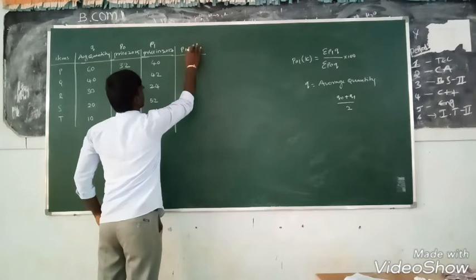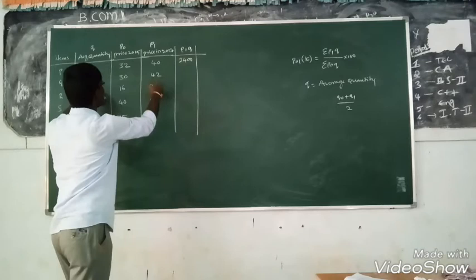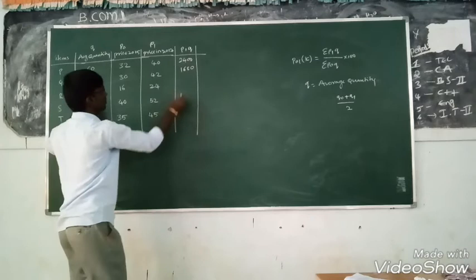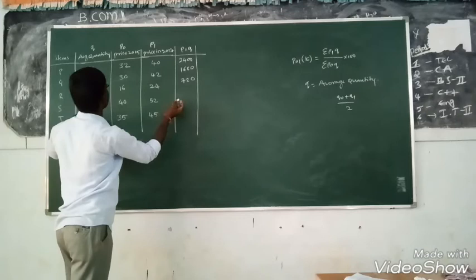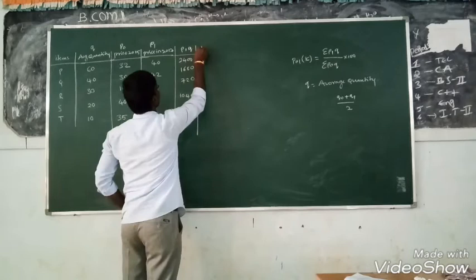P1 into Q. Where is the P1? P1 Q, P1 into Q. 32 into 60 is 1920, 50 into 40 is 2000, 40 into 30 is 1200, 60 into 20 is 1200, 45 into 10 is 450.